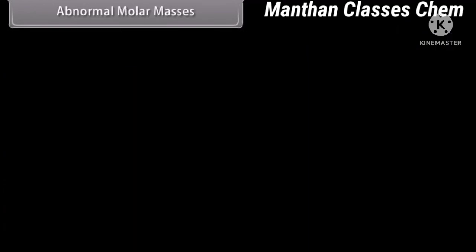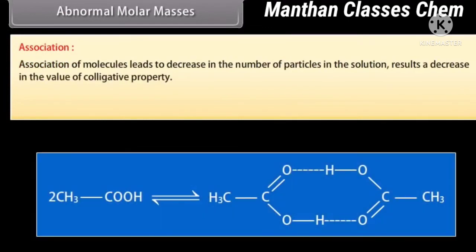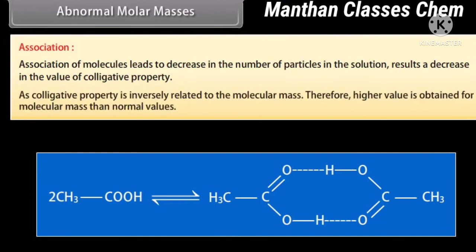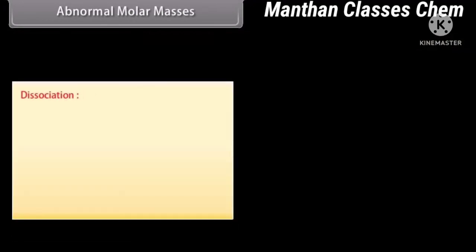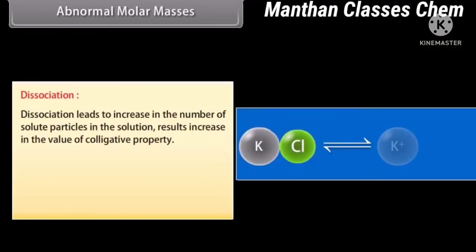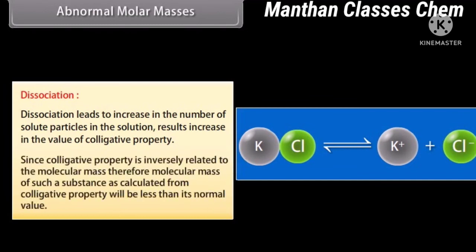Abnormal Molar Masses. Association: Association of molecules leads to a decrease in the number of particles in the solution, resulting in a decrease in the value of colligative property. Since colligative property is inversely related to molecular mass, a higher value is obtained for molecular mass than the normal value. Dissociation: Dissociation leads to an increase in the number of solute particles, resulting in an increase in the value of colligative property. Therefore, the molecular mass calculated from colligative property will be less than its normal value.